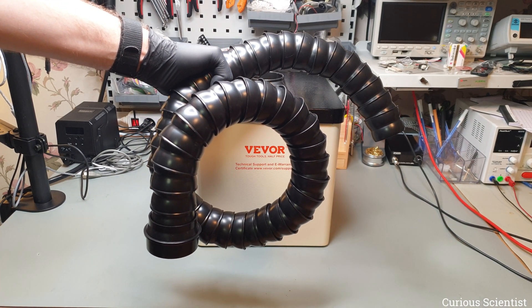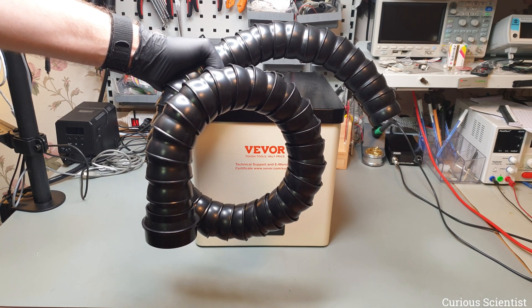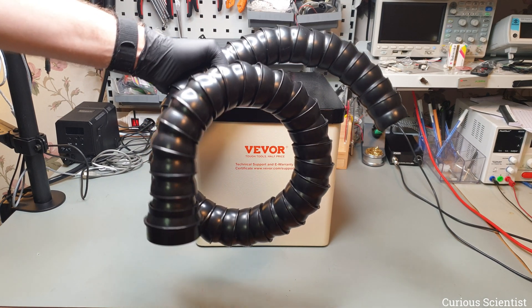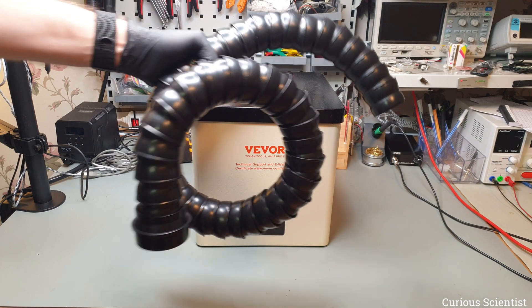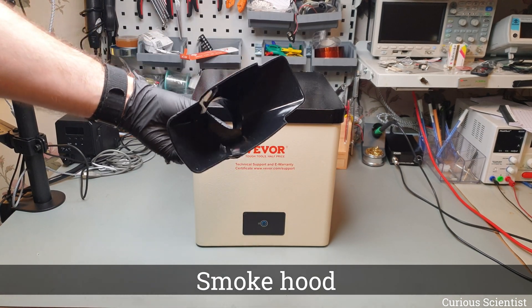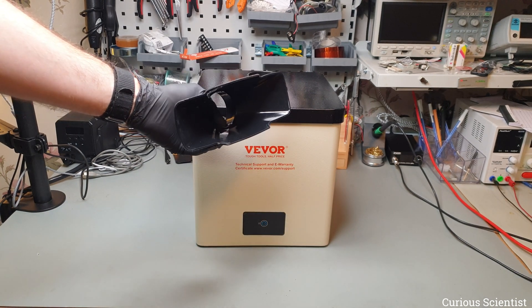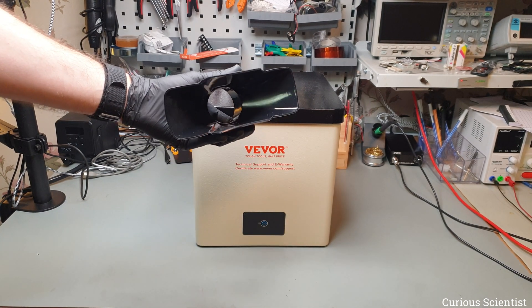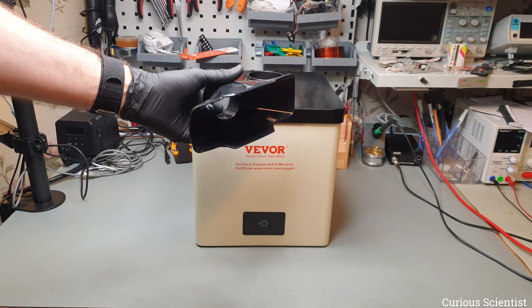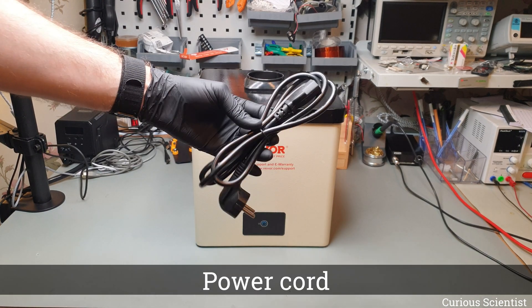When it is fully extended it is 120 centimeters long, so it's quite long, enough for most places. Then we have this rubber piece which goes on the end of this tube to help suck in the fume more efficiently. Then we have a power cable, of course.